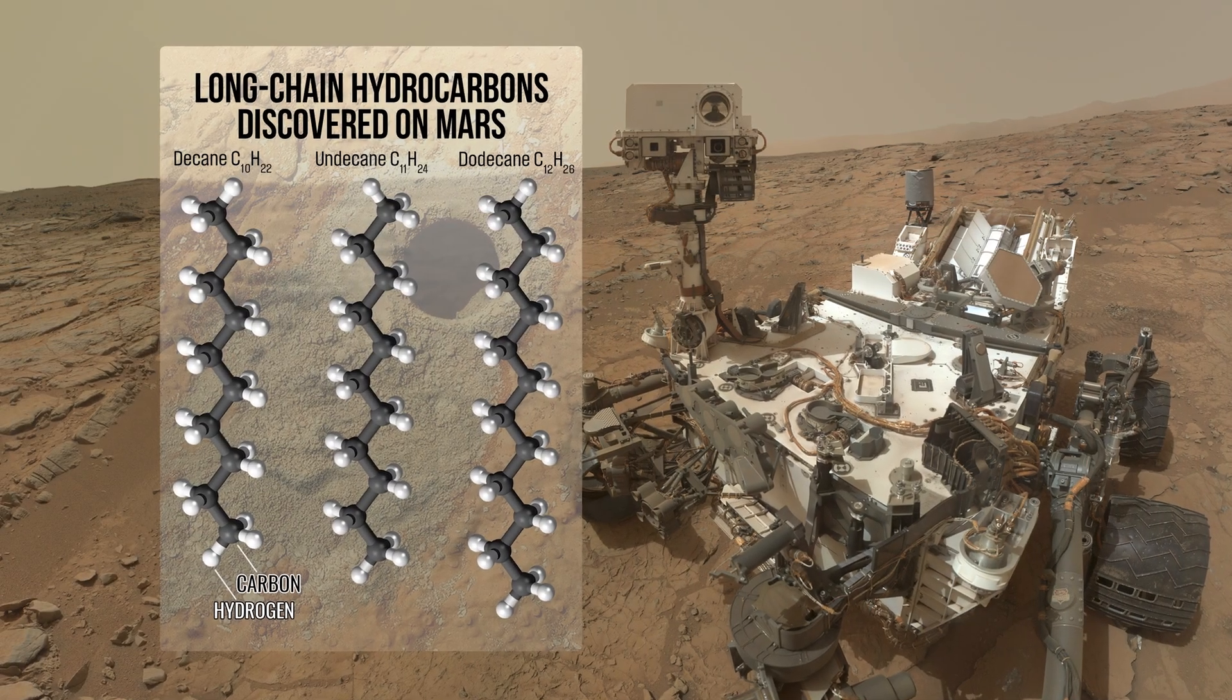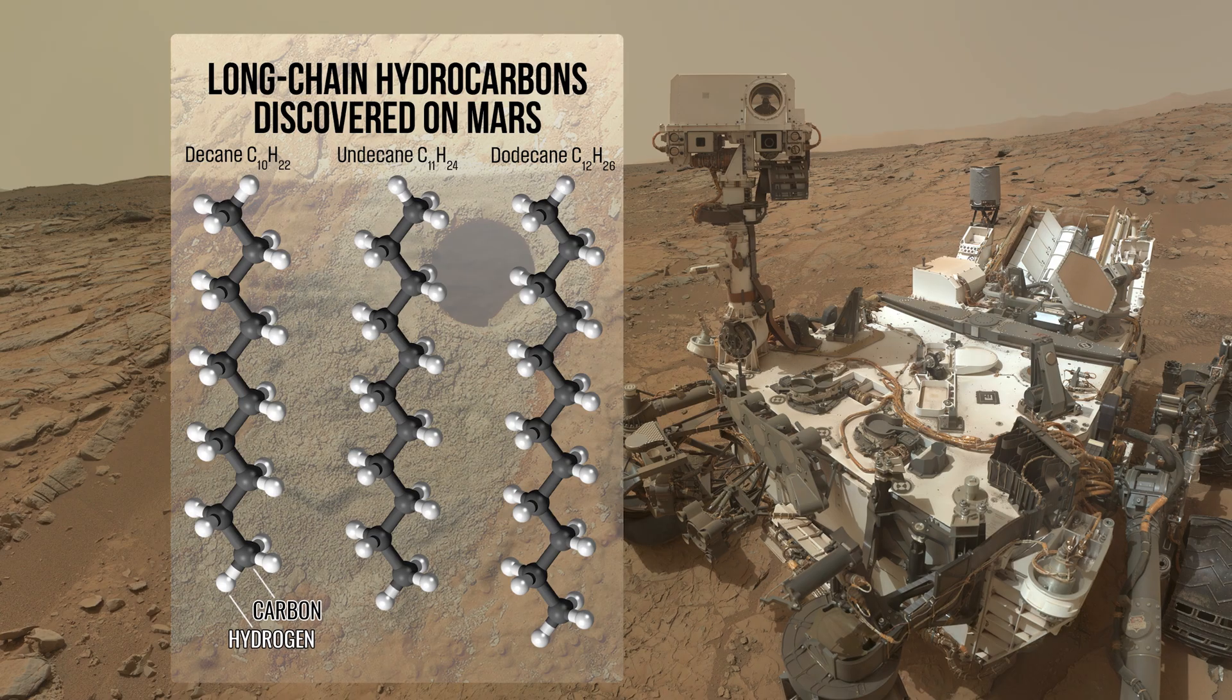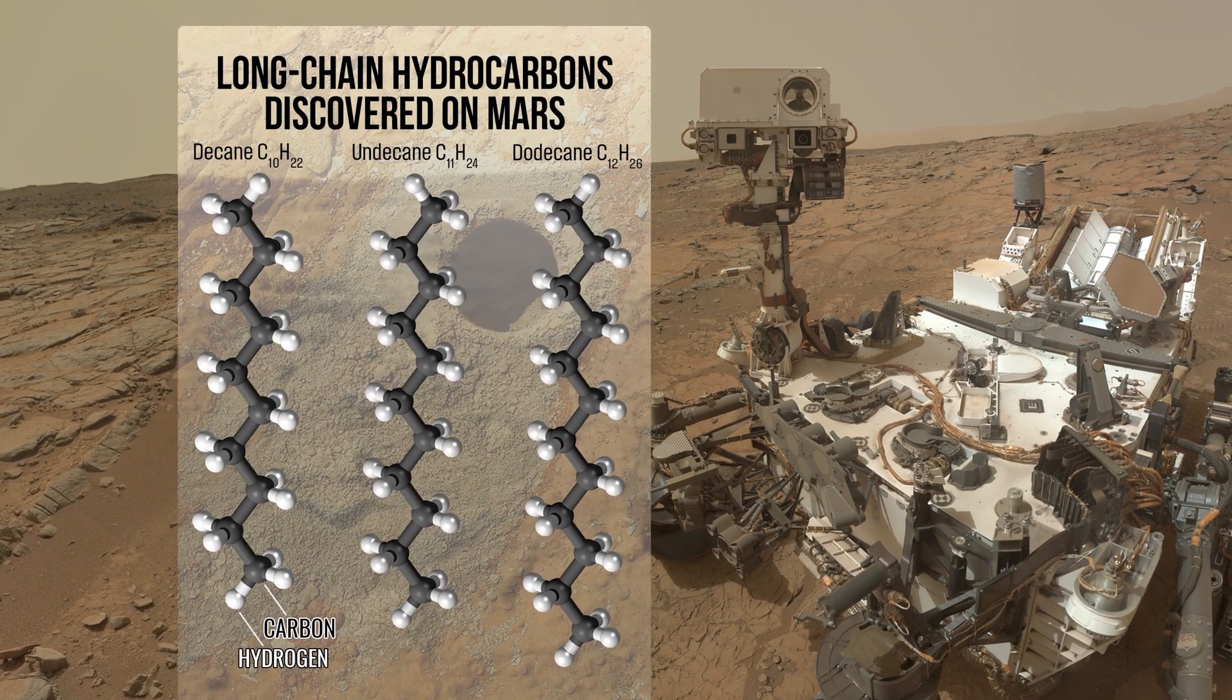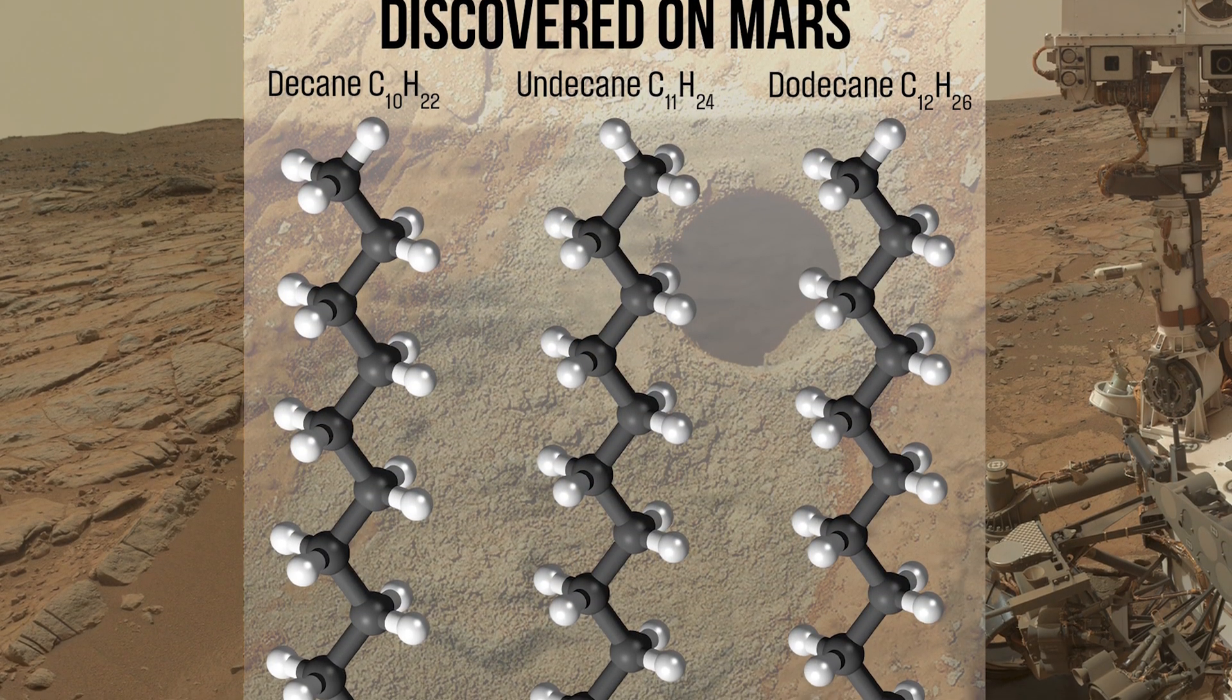Now, for the first time, scientists have identified long-chain hydrocarbons within the Cumberland samples, the largest organic molecules yet discovered on Mars.